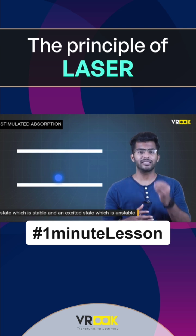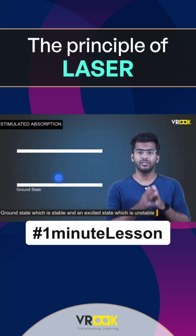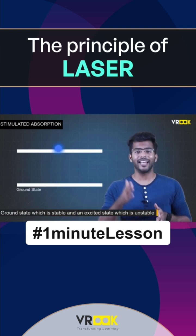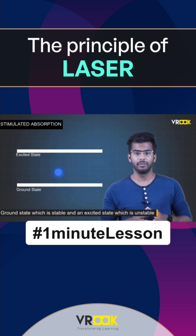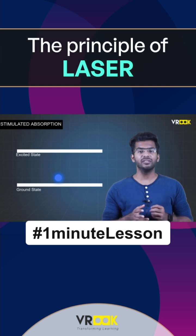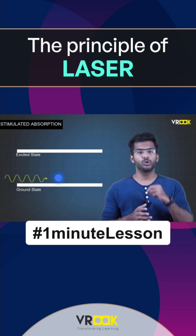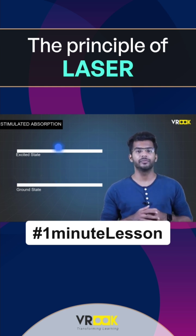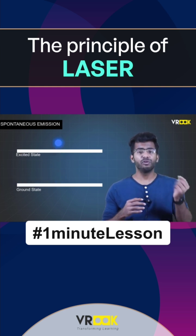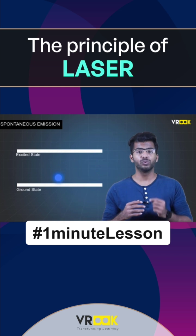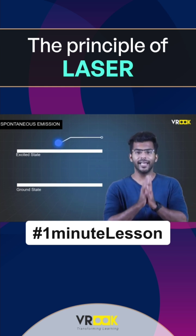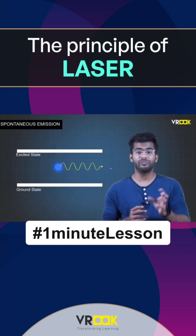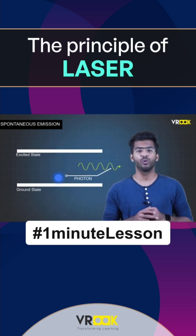Every atom has a ground state which is stable and an excited state which is unstable. We are sending the photon to make an atom go to the excited state. The atoms will fall back to the ground state within a short period, and in this process it will release the photon.